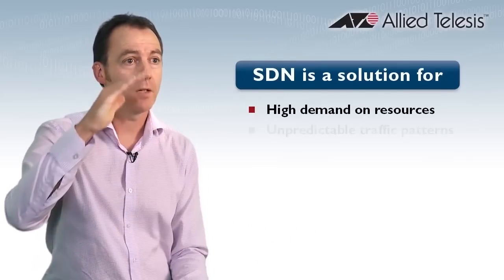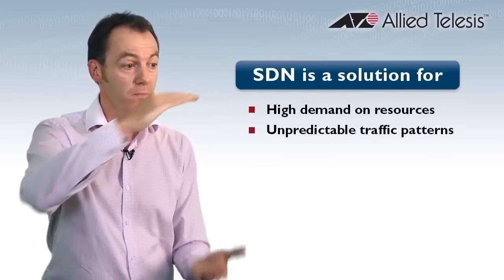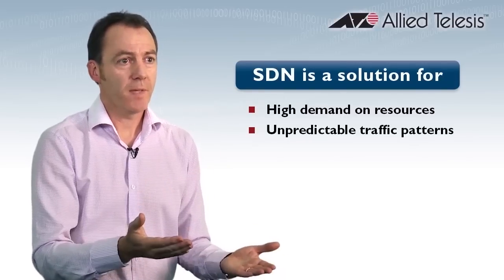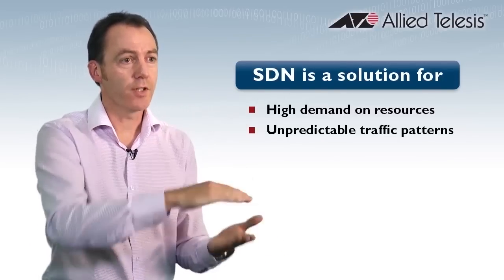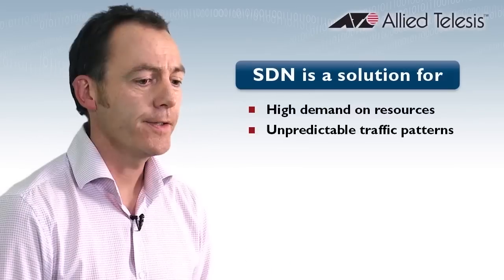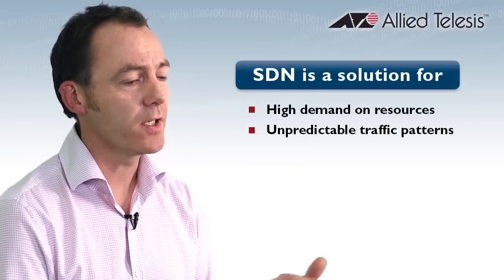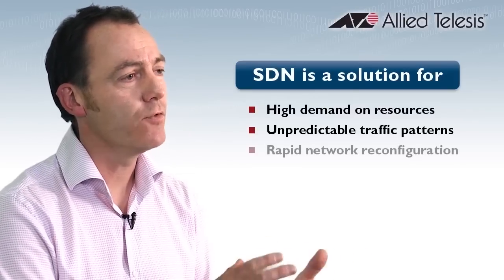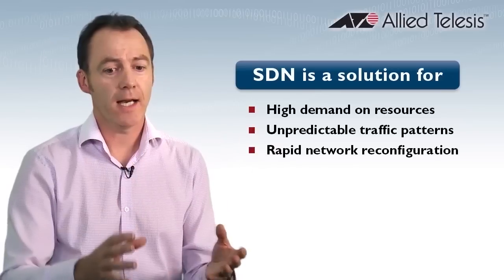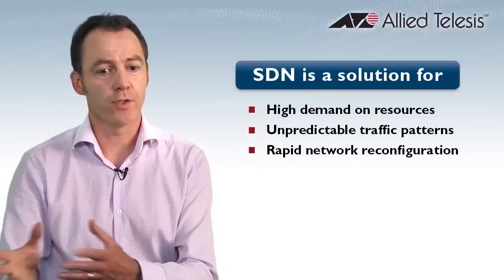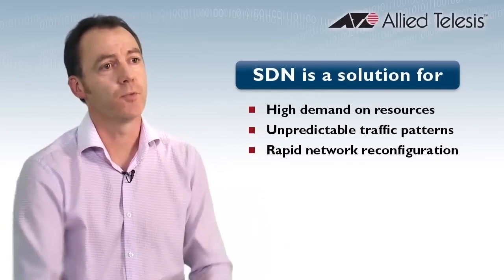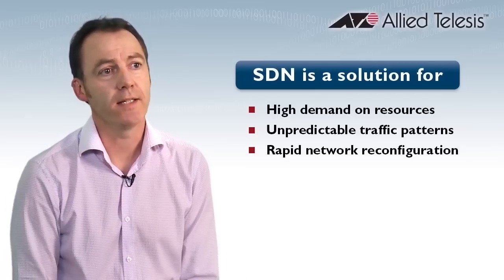Either scale the network infrastructure to meet the peaks, which is very expensive and means that the majority of the network is underutilised most of the time, or you build your network in such a way that it can reconfigure itself automatically to cope with those peaks and channel the resources to meet the appropriate demand. And that's what SDN does.